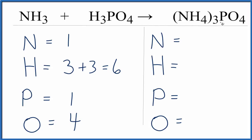Over on the products, we have three times the one, so we have three nitrogens, three times the four, that gives us 12 hydrogens. This three goes to everything in the parentheses, one phosphorus and four oxygens.